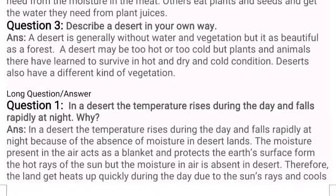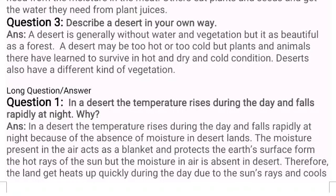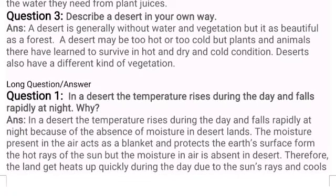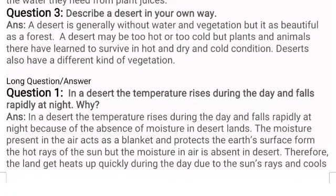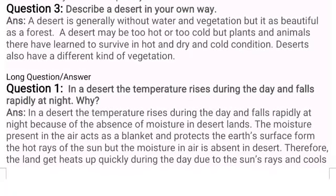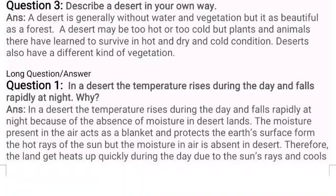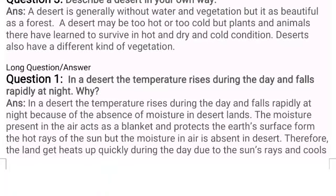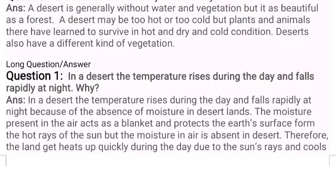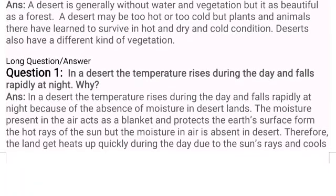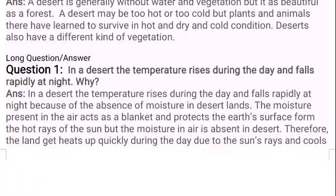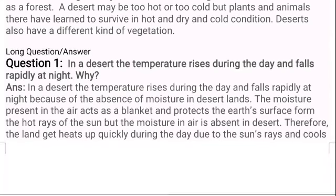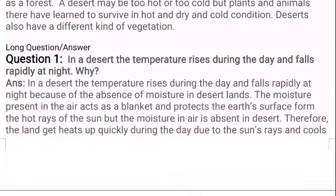But in the desert there is no moisture in the air, so no such blanket is formed to protect the desert area. That is why the land heats up quickly during the day — it rapidly absorbs temperature because of the absence of moisture in the air and due to the sun's rays. And at night, since there are no sun rays, it cools down rapidly. This is the reason — the absence of moisture in the air.